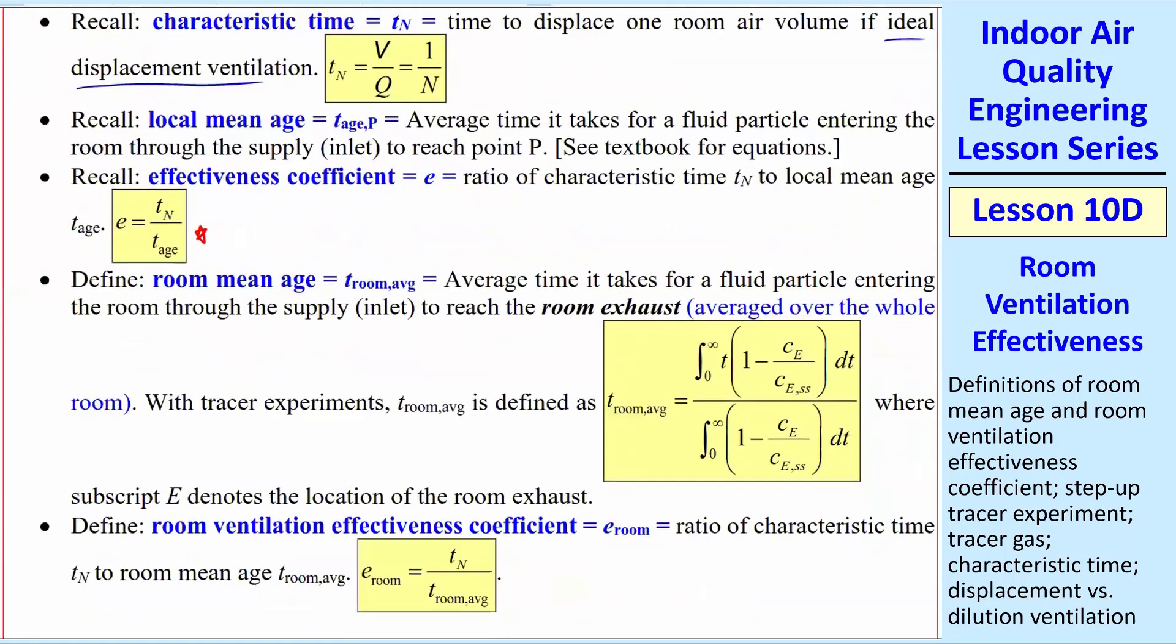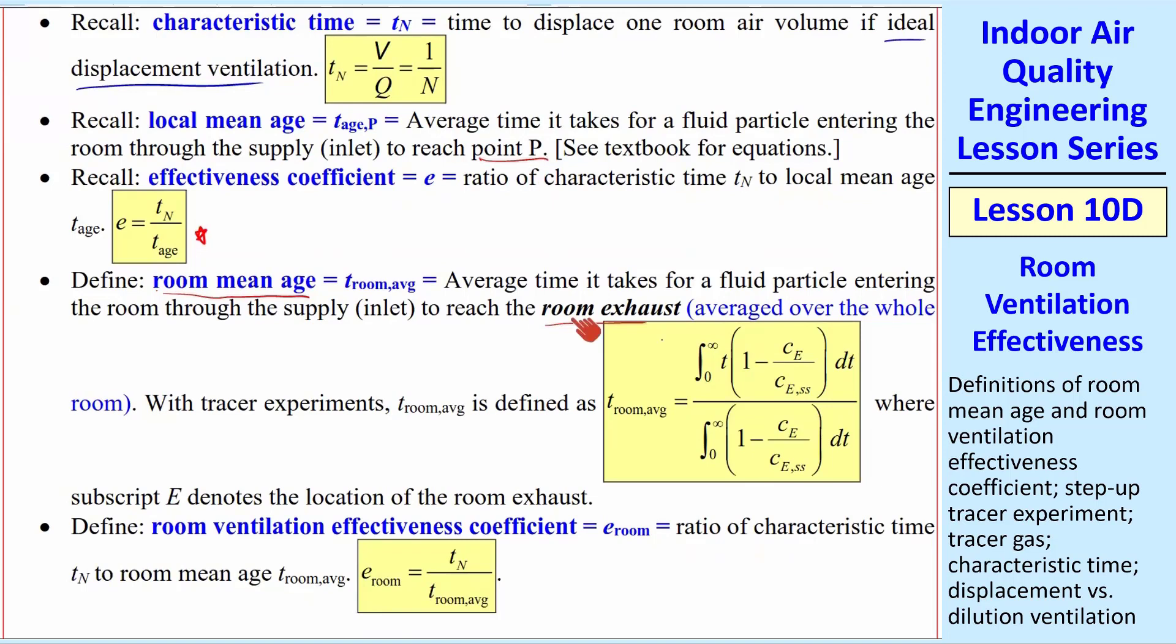Now we're going to define this T room, average, or room mean age, which is a similar kind of thing. An average time it takes for a fluid particle entering the room through the supply to reach the room exhaust instead of P. This was point P, this is room exhaust, but otherwise it's the same. The difference is it's averaged over the whole room. It's a global property, as I said, because everything ends up going to E.